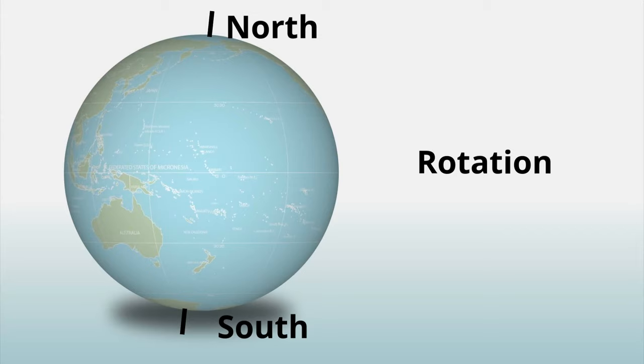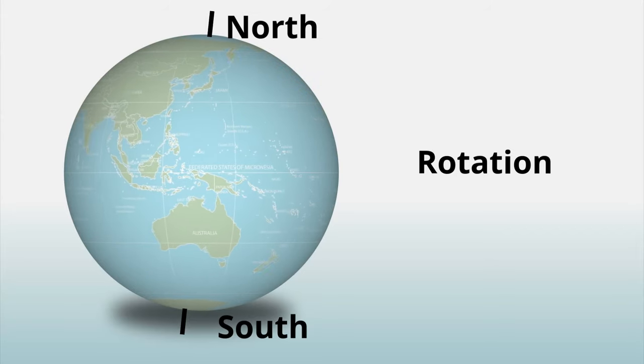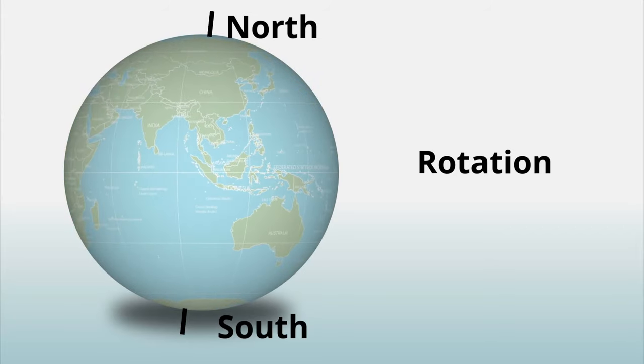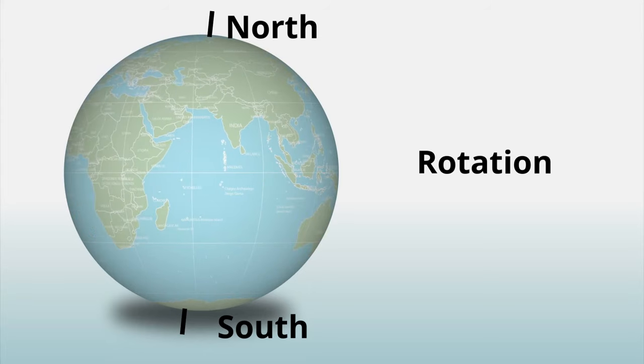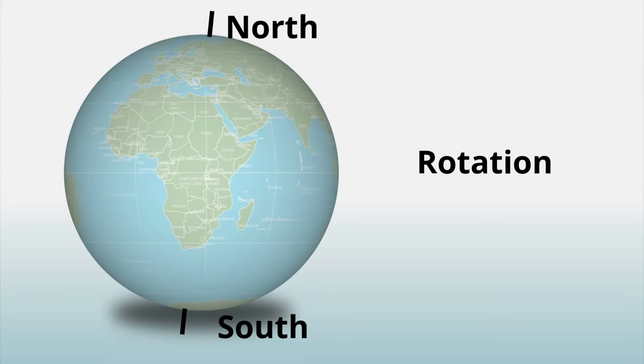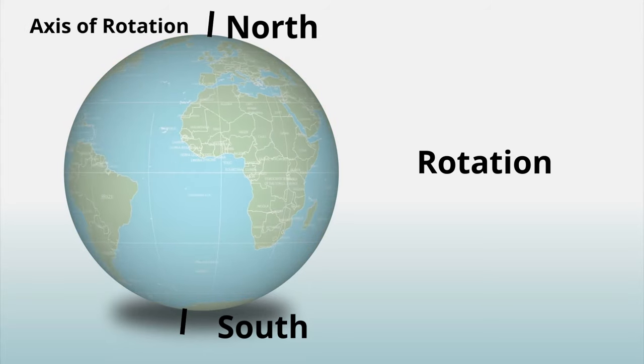Up first, rotation. The Earth spins or rotates about an imaginary line that passes through the north and south poles of the planet. This line is called the axis of rotation.